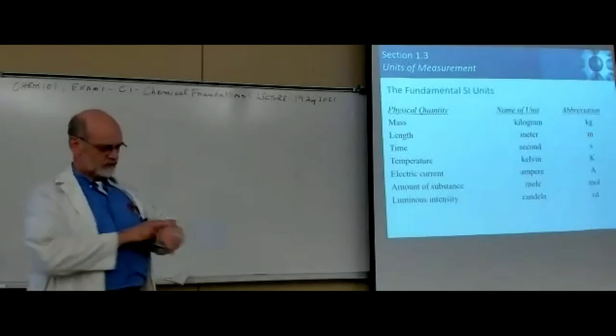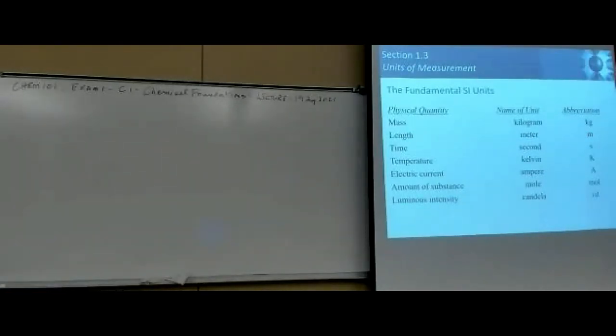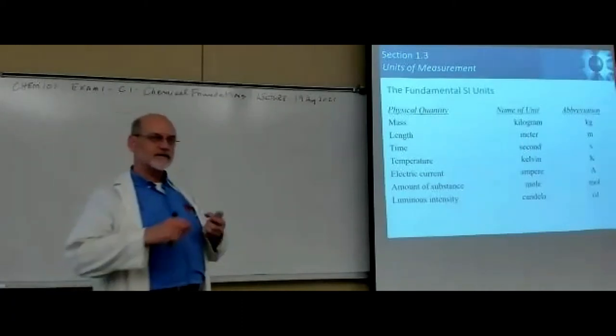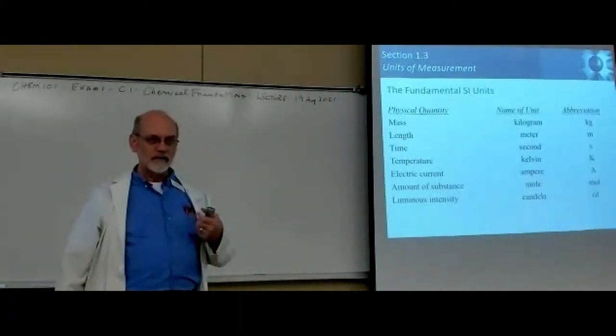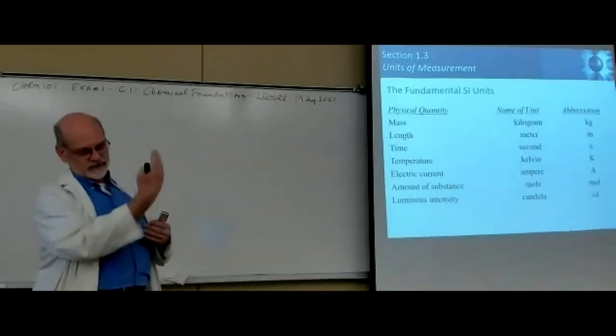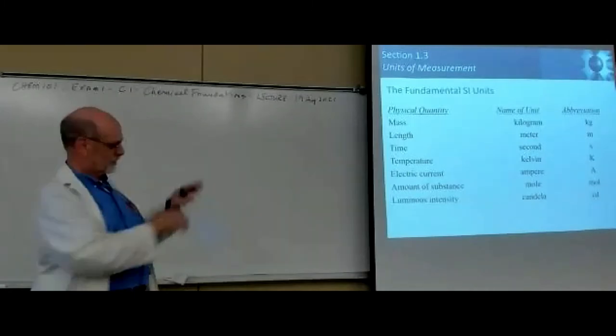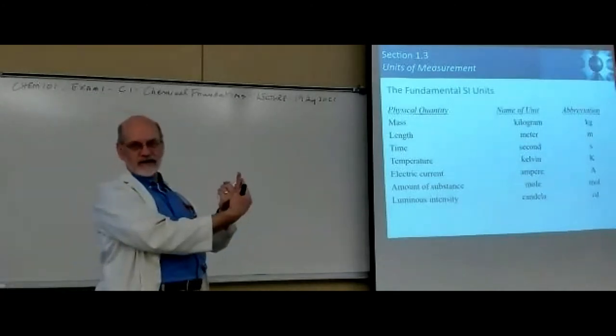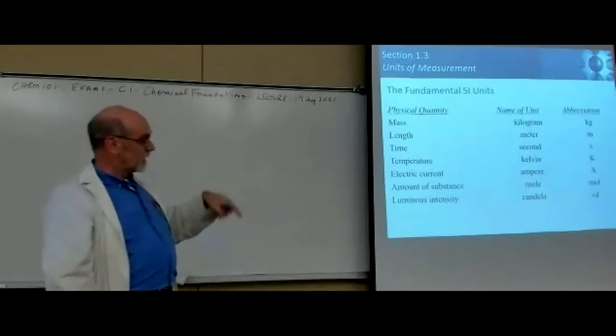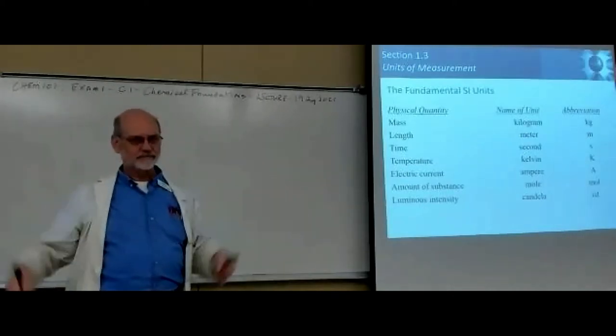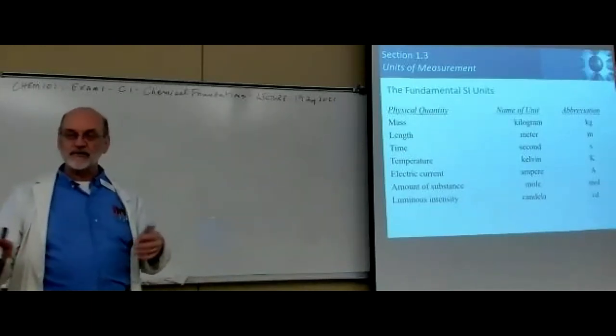Length is the meter. It was originally derived from the distance from the equator to the North Pole through the city of Greenwich, through the observatory at Greenwich. That's the prime meridian, longitude starts there. And then you subdivide it until you get some manageable length. And the meter then was established with a platinum iridium alloy.